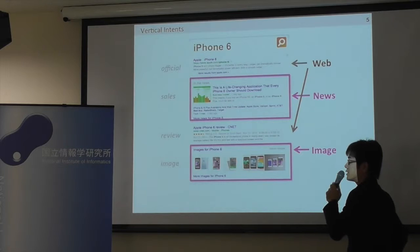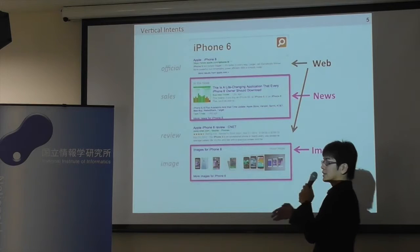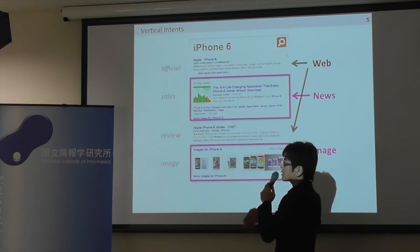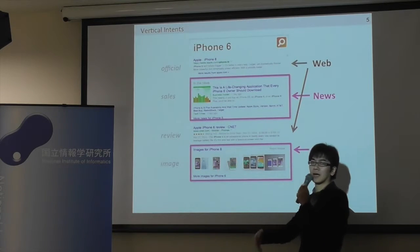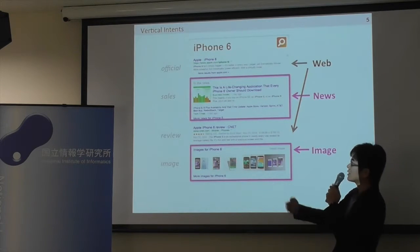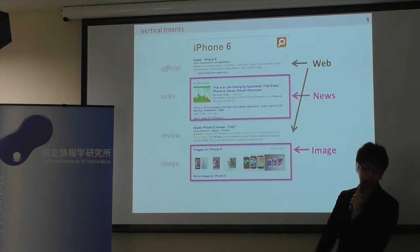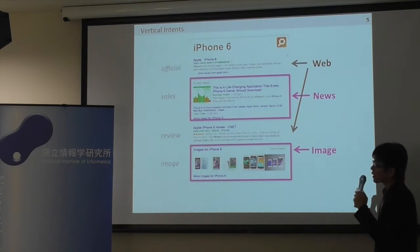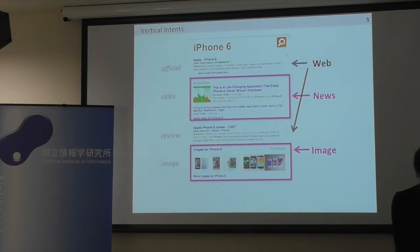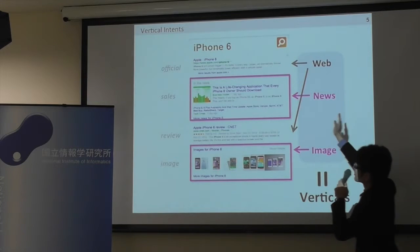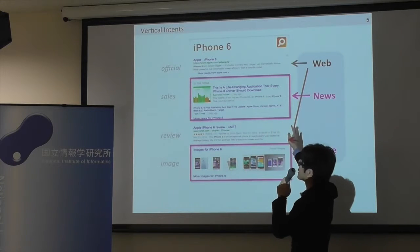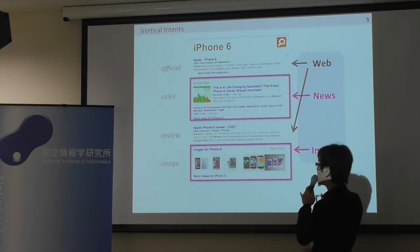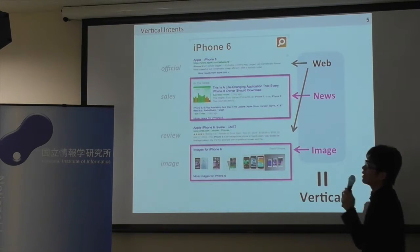In this way, today's search engines are comprised of not only web search results, but also other types of search results. In our community, these kinds of result types are called verticals.